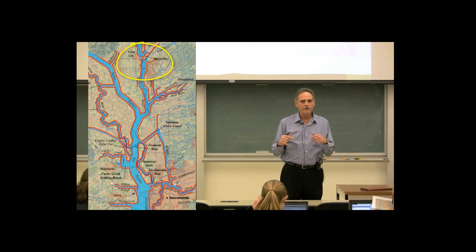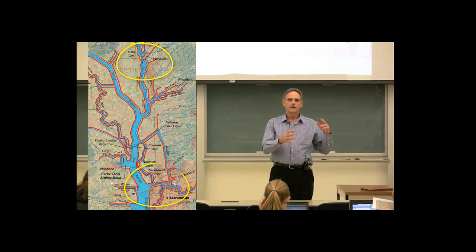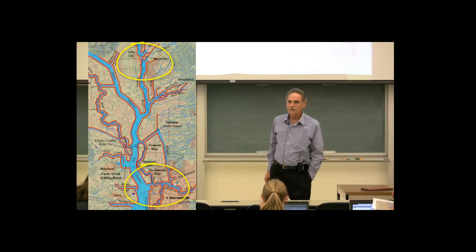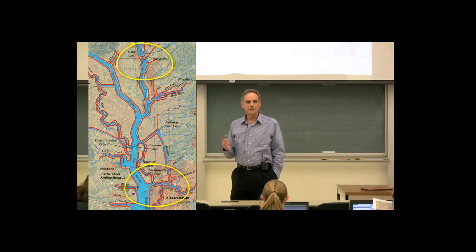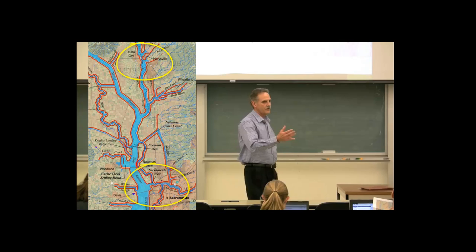And then down in our area, Sacramento on the east side of the river, and West Sacramento, or it started out as the town of Washington, but West Sacramento on the west side of the river.